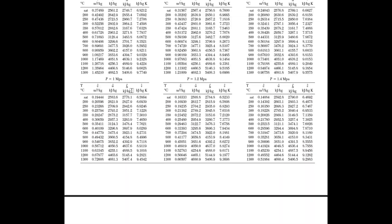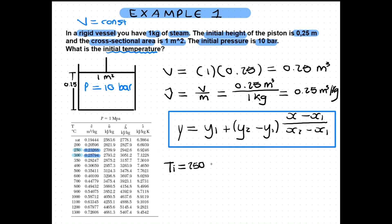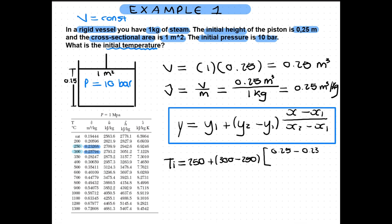So we go to the superheated table and look for 1 MPa. Then we need to get the temperature at 0.25 meters cubed per kilogram. We can see that the specific volume is not listed in the table and thus we need to interpolate. We interpolate between these values and get an initial temperature of 281 degrees celsius.